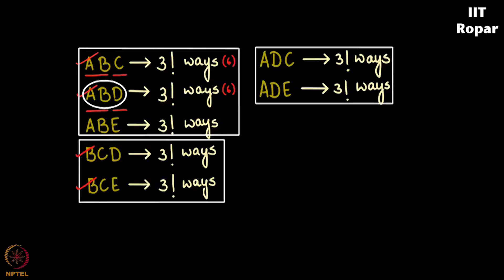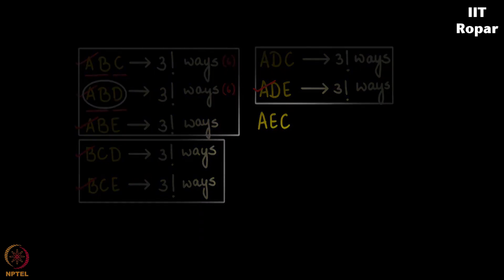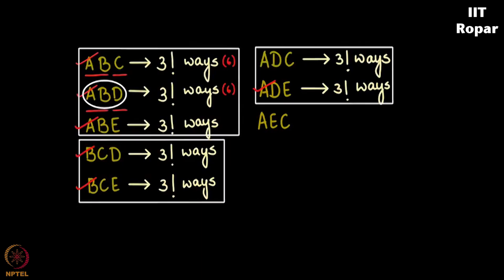How about A, E? A, E with D is over, A, E with B is over. A, E with C is not over as you can see, so A, E with C. A, E with D is over, A, E with C just got over, A, E with B is over. This is three factorial ways, done.